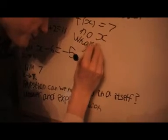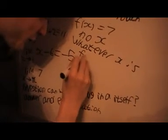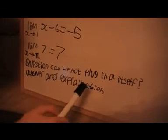This one is a strange one — we've got f of x is equal to 7. Notice that there's no x, so whatever x is, f of x is always 7. So the answer to this one would have to be 7 because it's always 7. A question some people might ask is: can we not just plug in a itself? Well, notice in this case we can — plugging in a, which is 3, gives 11. And for the previous one, plugging in 1 gives 1 minus 6, which is minus 5. But does it always work? The answer is no.